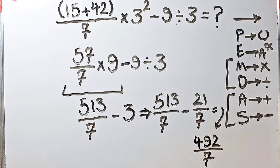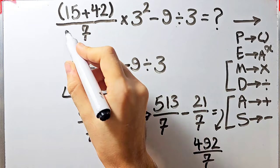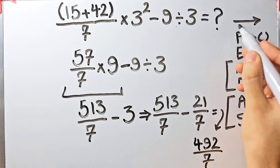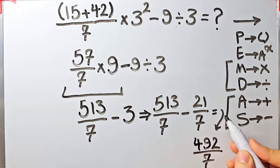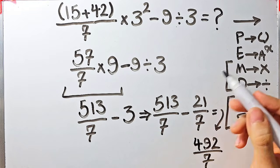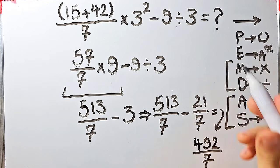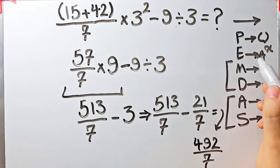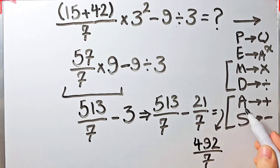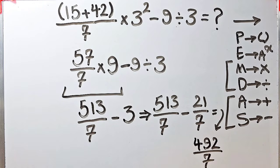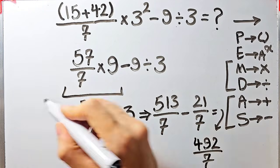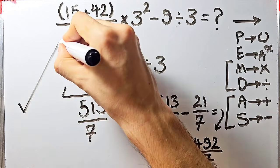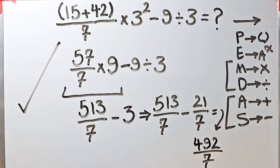If you want to get the right answer you must follow the PEMDAS rule, and if you don't pay attention to this rule you get the wrong answer. Let's review: P stands for Parentheses, E stands for Exponent, M stands for Multiplication, D stands for Division, A stands for Addition, and S stands for Subtraction. Thanks for watching! Please subscribe to the channel and leave a comment. Goodbye!